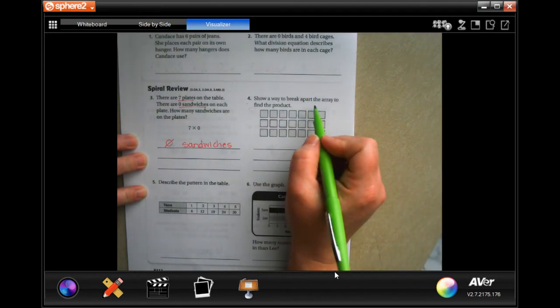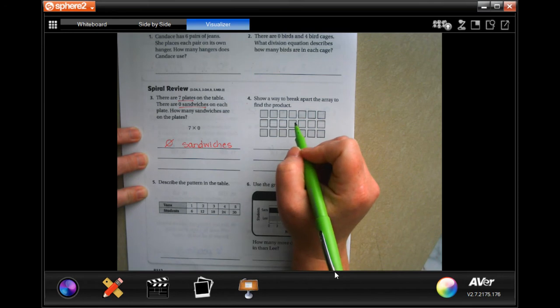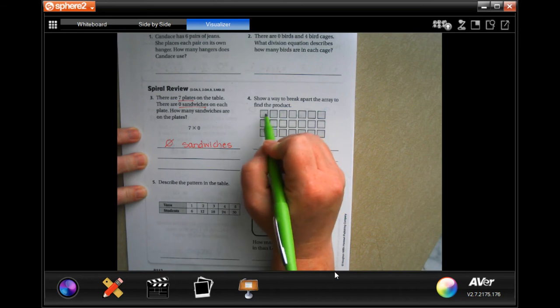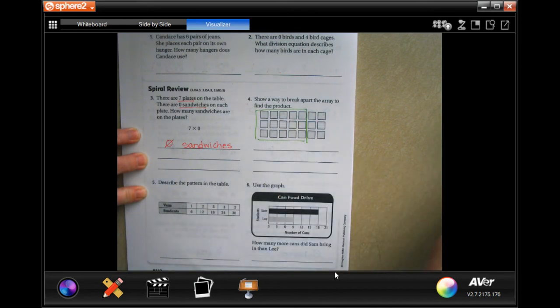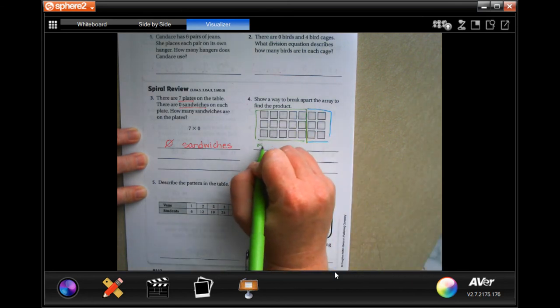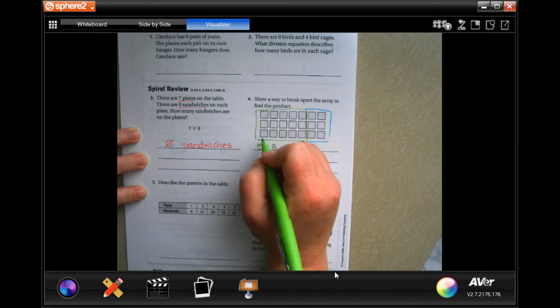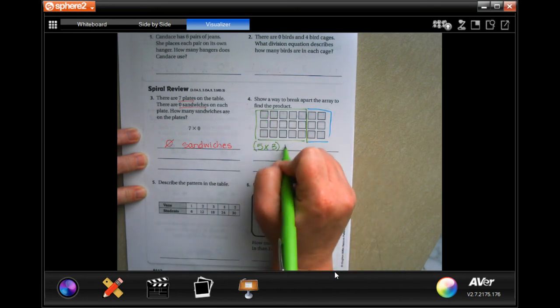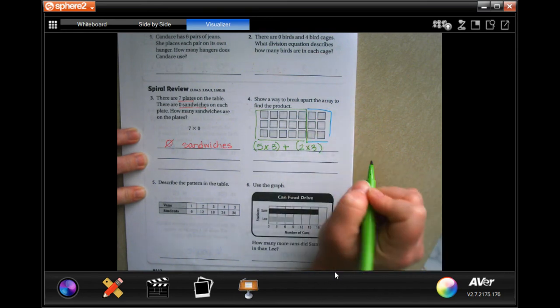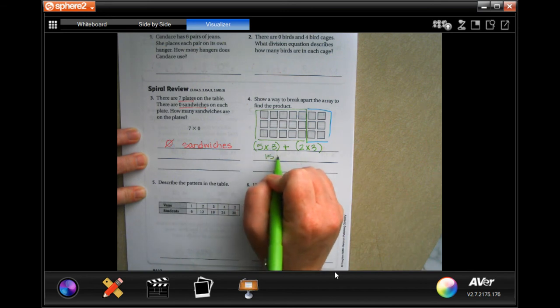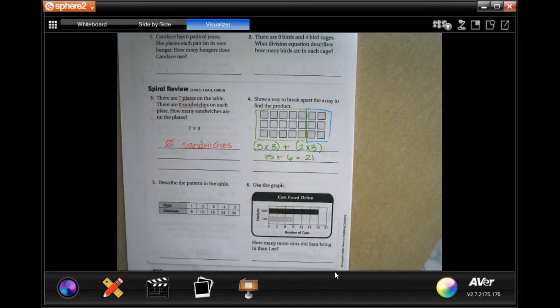Show a way to break the array to find the product. So I like to do it in super easy numbers. Like when it's a big one like this, I do it by five. So one, two, three, four, five. I'm going to break my array right here. So there's that side and then here's this side. So I wind up with five times three because there's three down plus two times three. So then I just have 15 plus six, which is 21.